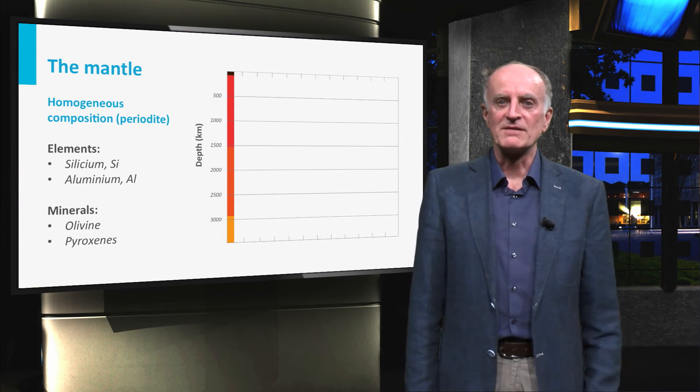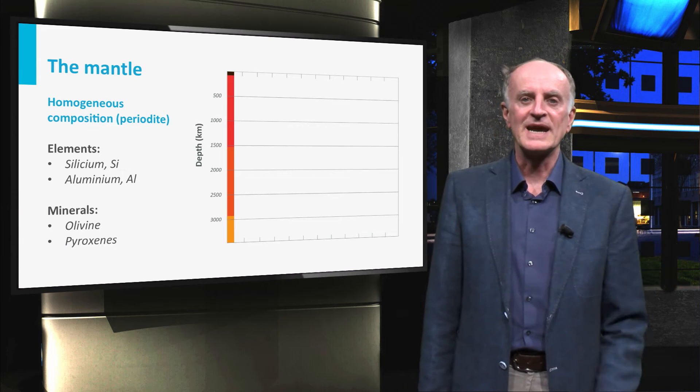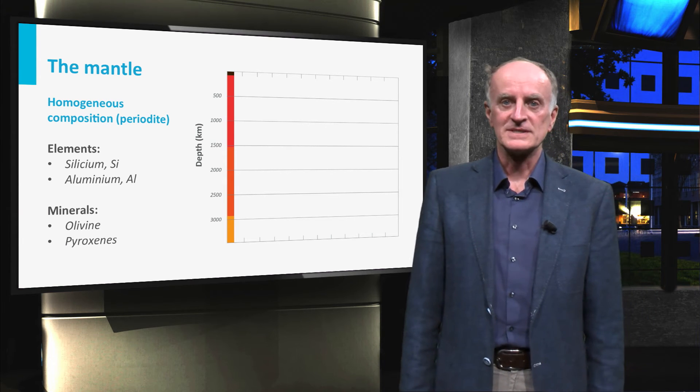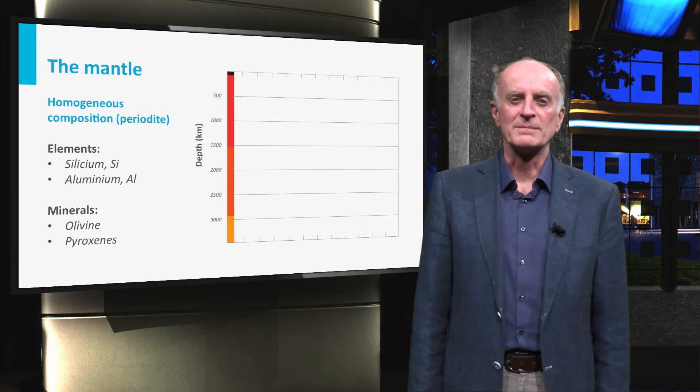Rocks forming the mantle are very homogeneous, composed of elements such as silicon and aluminum and of minerals such as olivine and pyroxenes. The corresponding rocks are called peridotites.